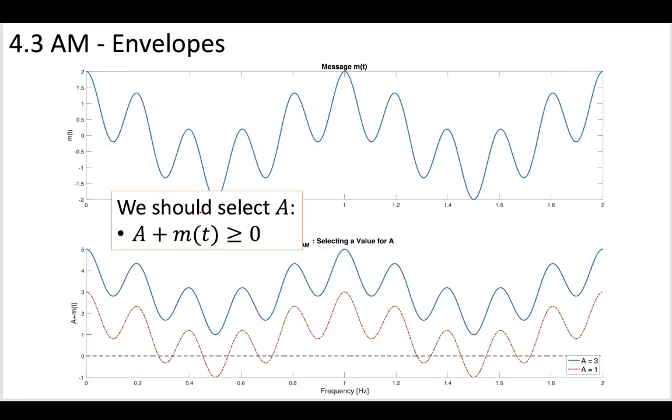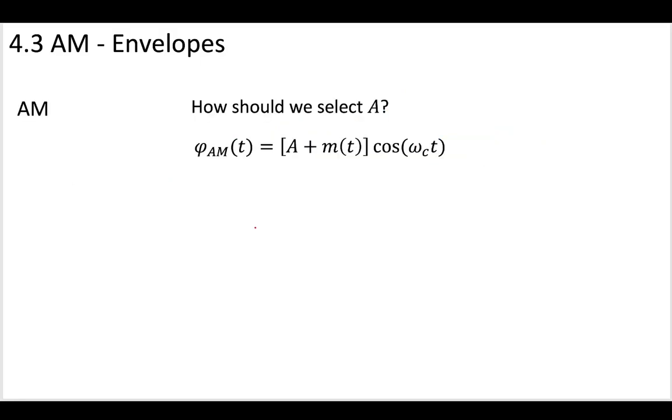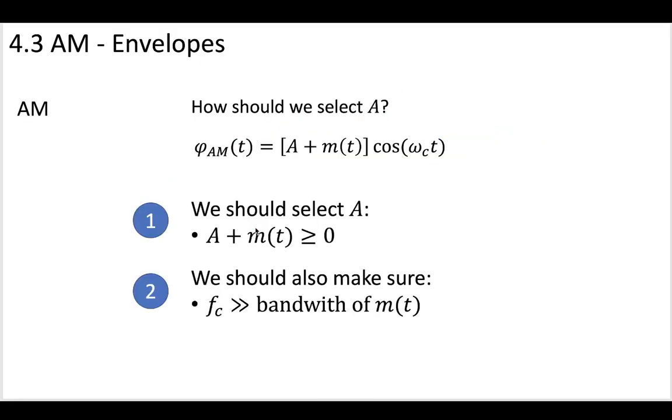So for our first criteria, we're going to say that A should be, A plus the message should be larger than zero at all times.